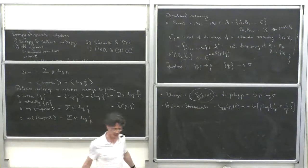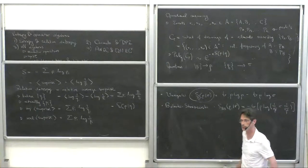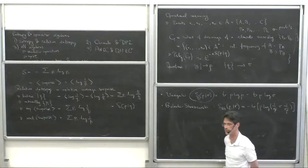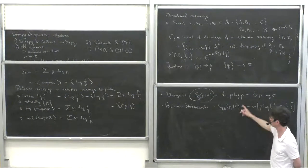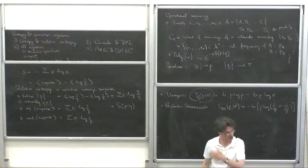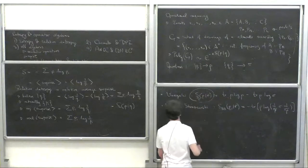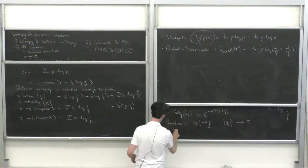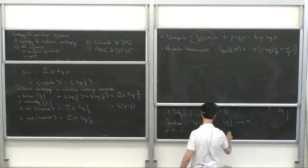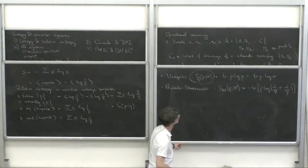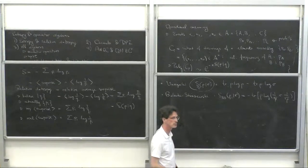Let me clarify. The first formula on the board is from Umegaki, and it's: trace of rho log rho minus trace of rho log sigma. I can combine both under the trace if you want. And yes, rho and sigma are density matrices — I'm using rho, sigma, omega, and so on for density matrices. On the second definition, the term inside the log is sigma divided by rho because there's a root rho and root rho in the denominator.